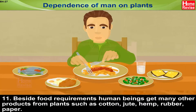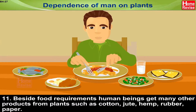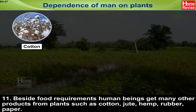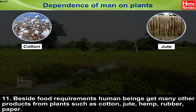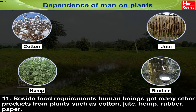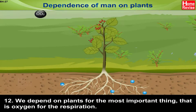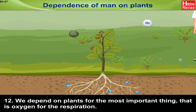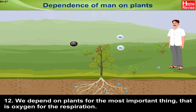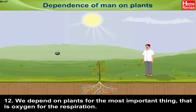Besides food requirements, human beings get many other products from plants such as Cotton, Jute, Hemp, Rubber, and Paper. We depend on plants for the most important thing, i.e., Oxygen for respiration.